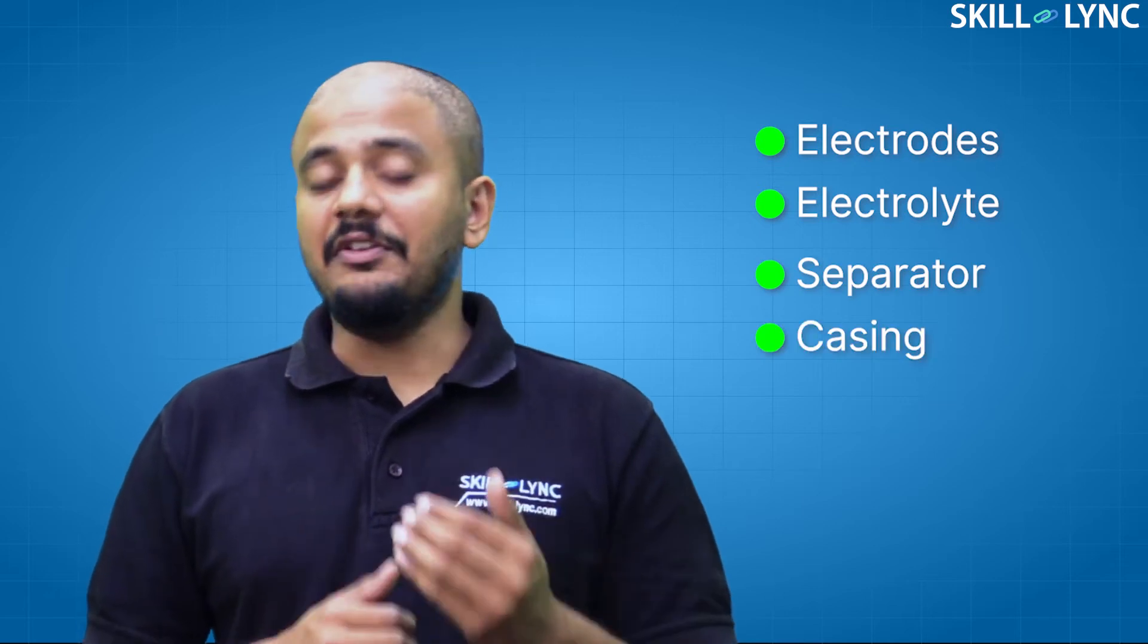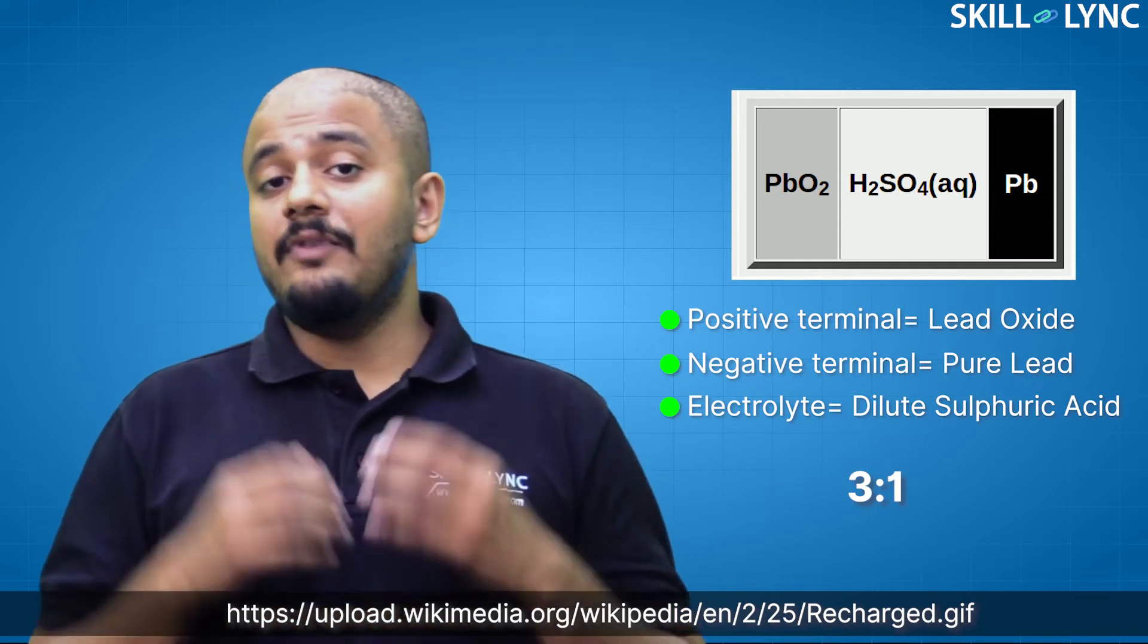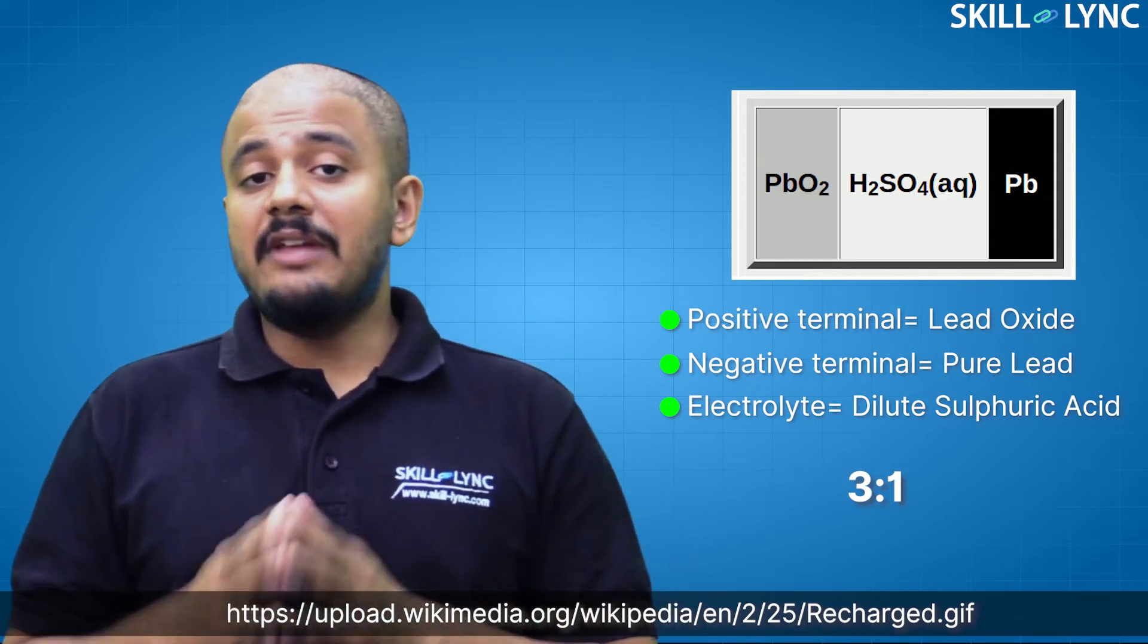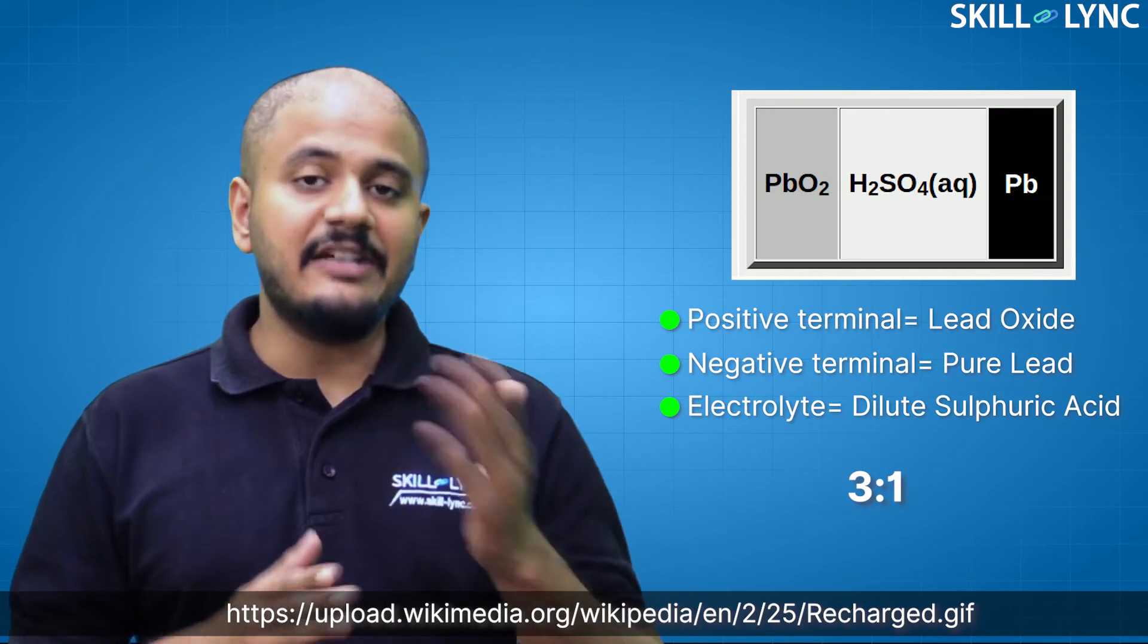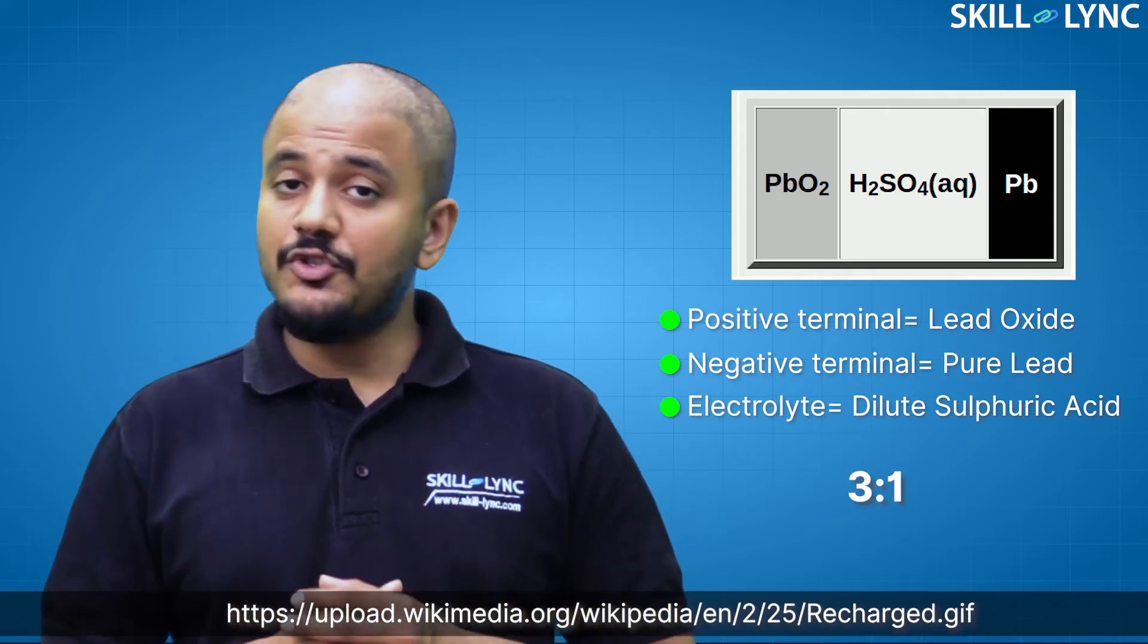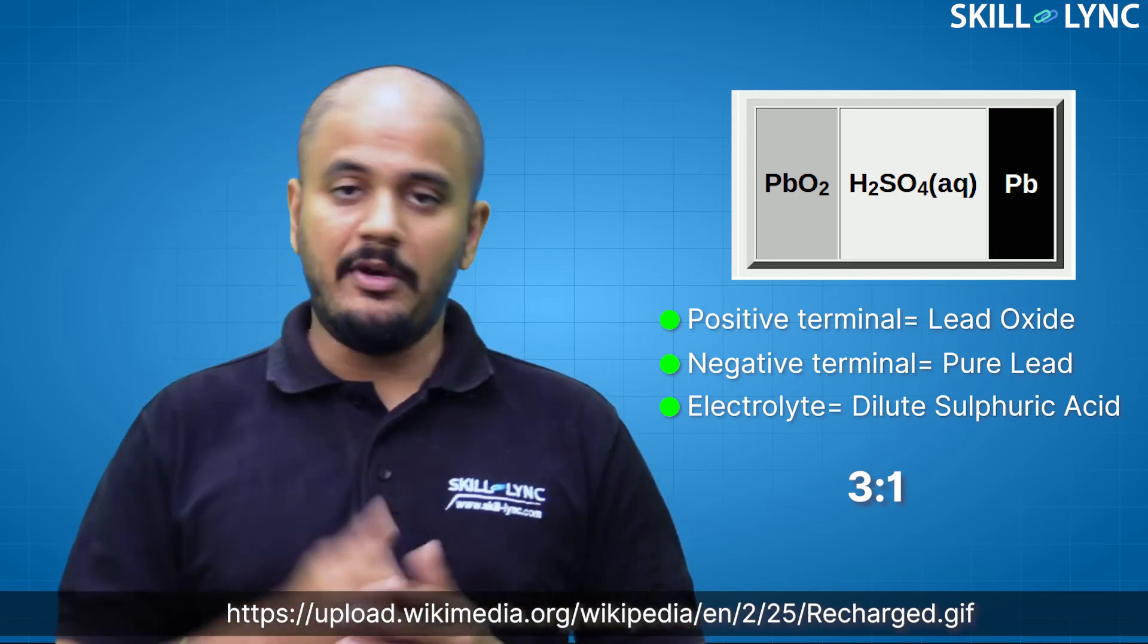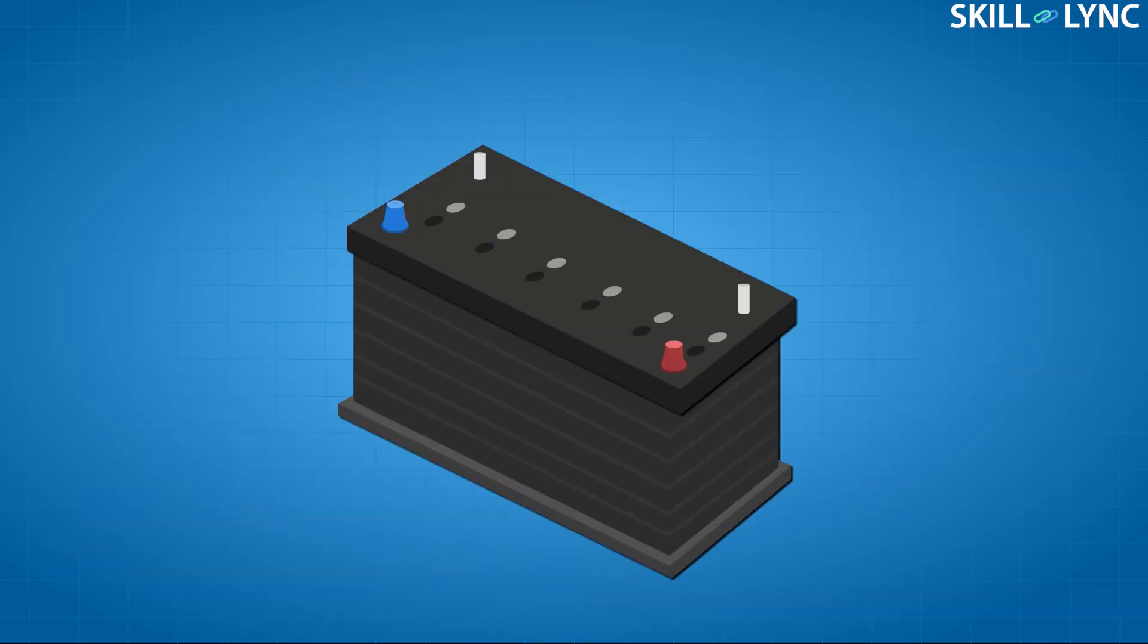It consists of two electrodes, the electrolyte, separator, and the casing. The positive terminal of the battery is made up of lead oxide and pure lead is used for the negative terminal. The electrolyte consists of a mixture of water and sulfuric acid in the ratio of 3 is to 1.